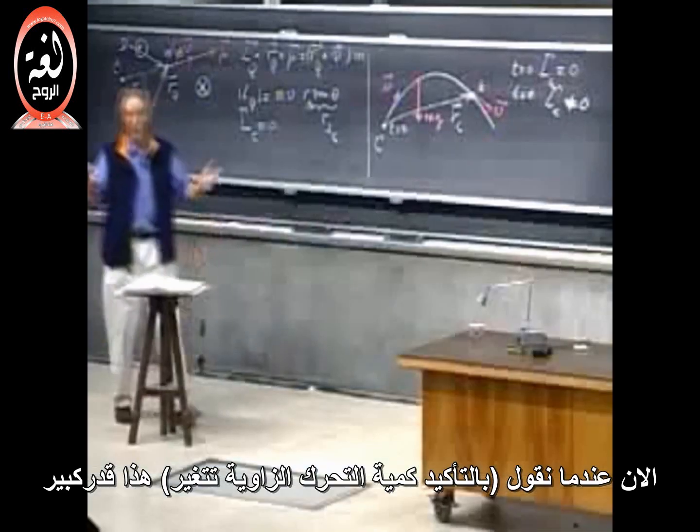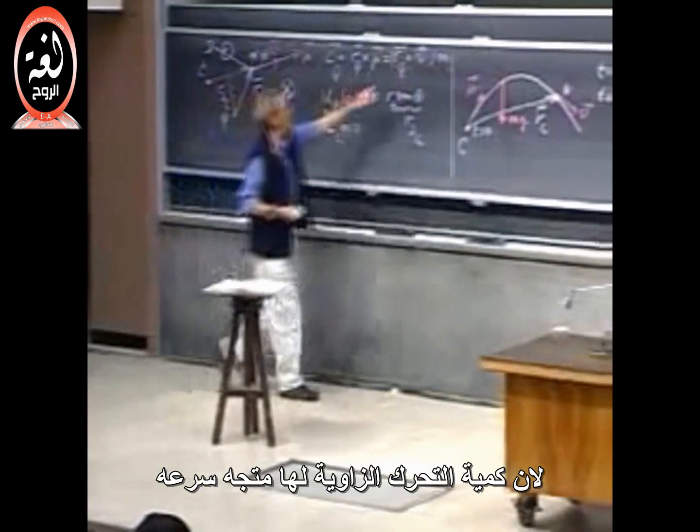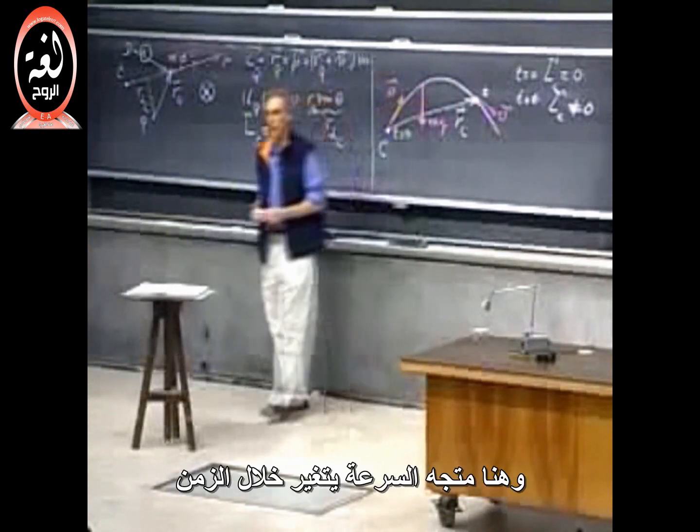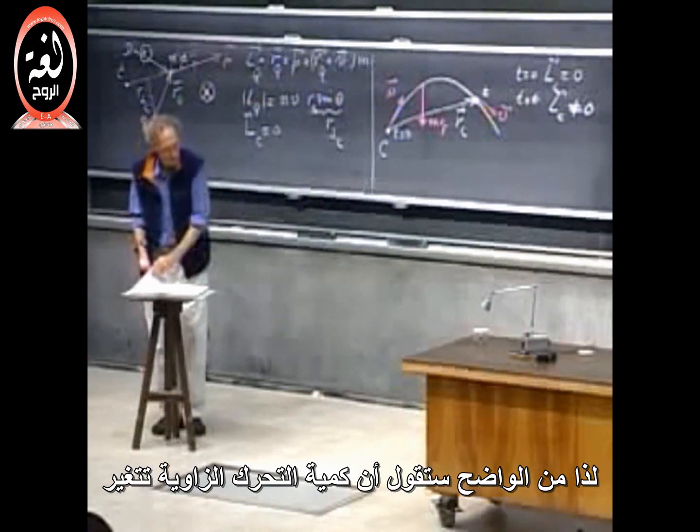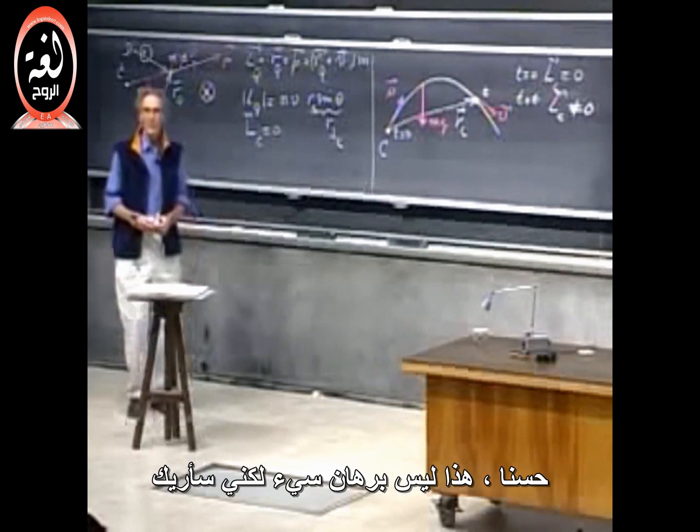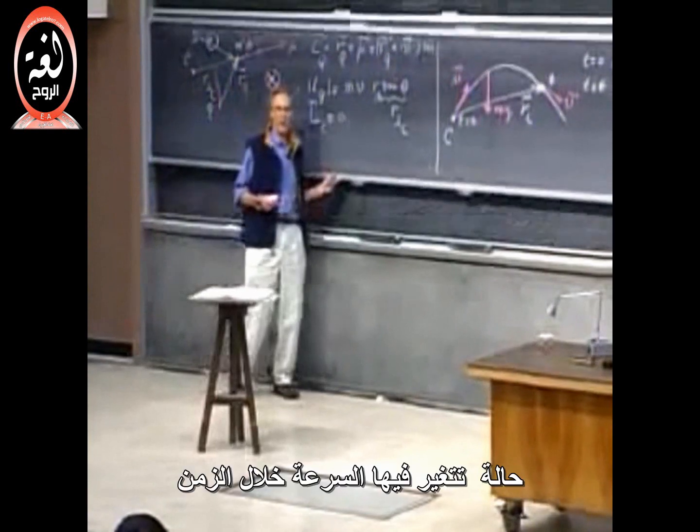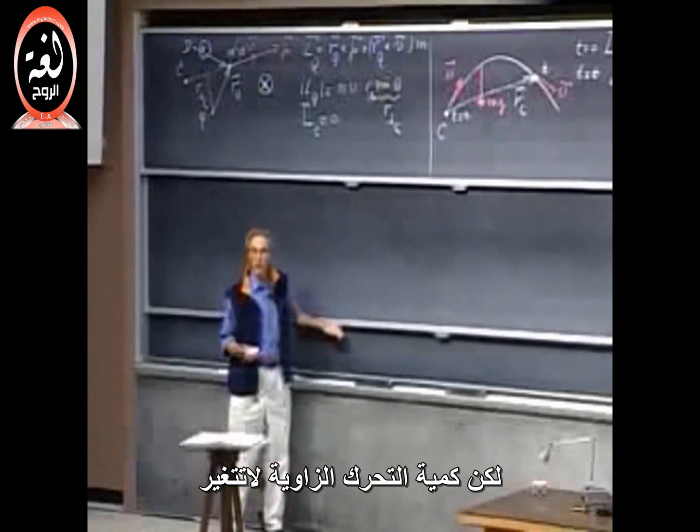Now, you will say, of course it was changing. Big deal, because angular momentum has a velocity vector in it. And here, the velocity vector is changing all the time. So obviously, you would say the angular momentum is changing. Well, yes, that is not a bad argument, but I will now show you a case where the velocity is changing all the time, but where angular momentum is not changing.